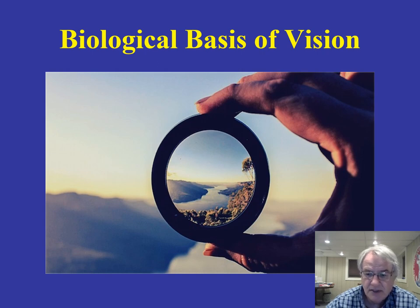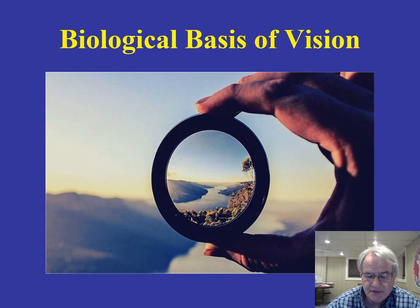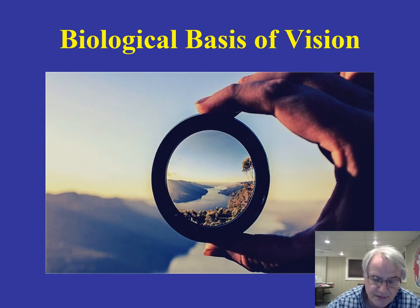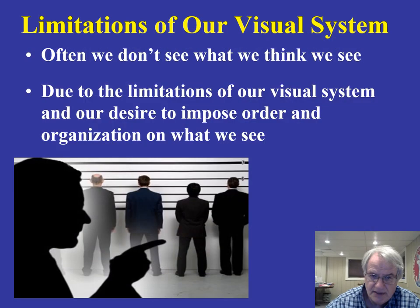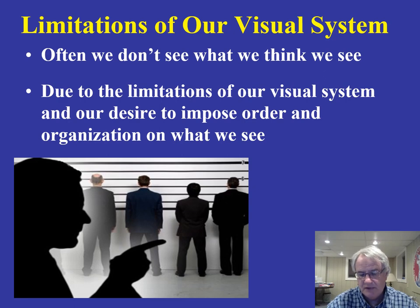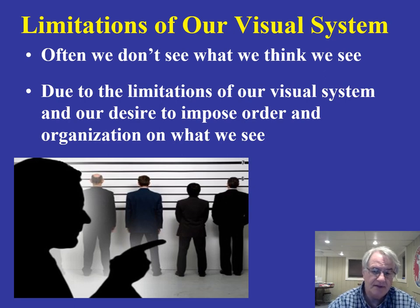When we talk about the biological basis of vision, we're talking about what happens when we perceive a visual stimulus and the chain of events that occurs, beginning with the eyes — what happens with the receptors in the eyes, how that information is transferred to various parts of the brain, namely to the back of the brain in the striate cortex, and then how that information ultimately gets to other parts of the brain.